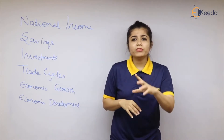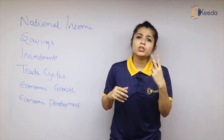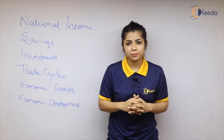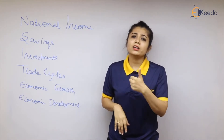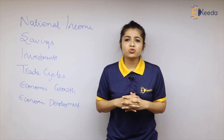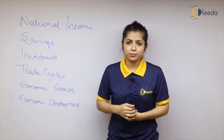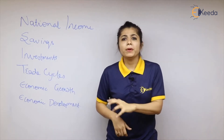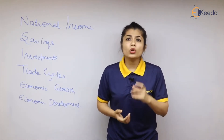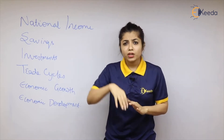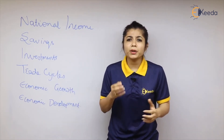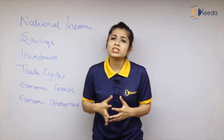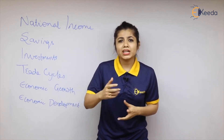Trade cycles are the basic scenarios that exist in any market. The two phases of a trade cycle are inflation and deflation, and the two stages are inflation and depression. Inflation means the prices of goods are very high and people cannot afford to buy them. Depression means the prices of goods and the economy have gone so low that traders do not want to sell goods at such a lower price.